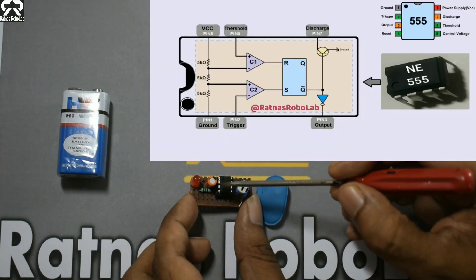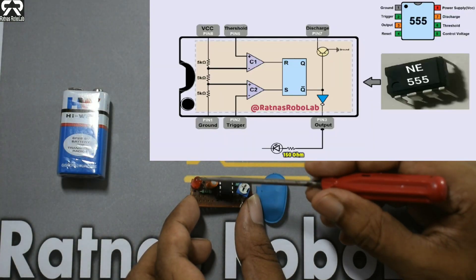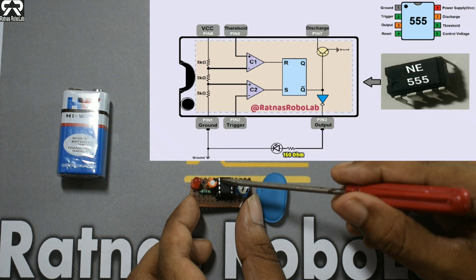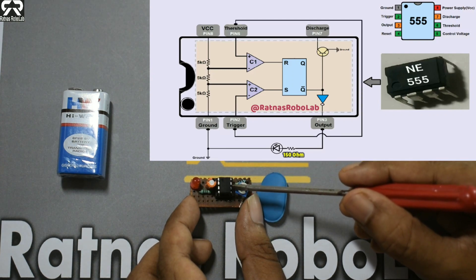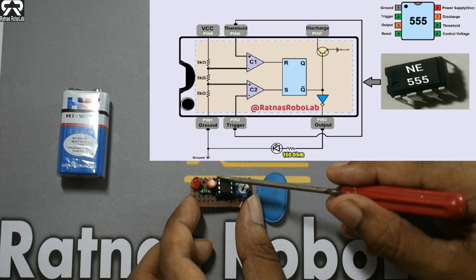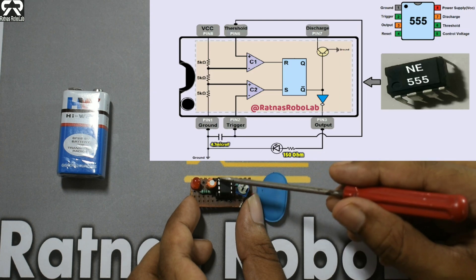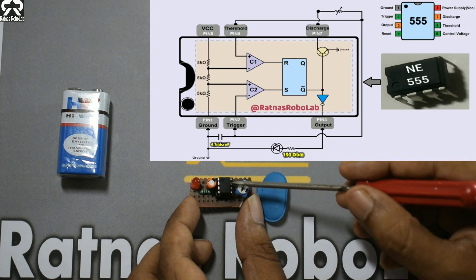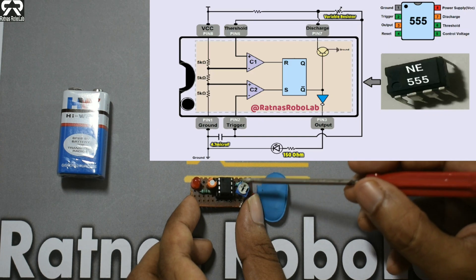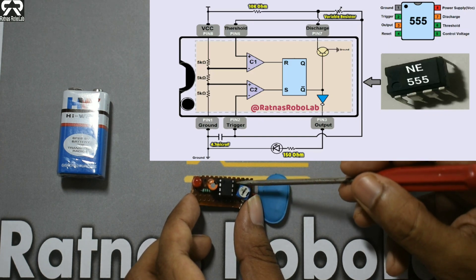Here a LED is connected to pin 3 of 555 timer with a resistance of 150 ohm. Pin 2 is connected to pin 6. A capacitor is connected with pin 2 and ground. Pin 6 is connected to pin 7 with a variable resistance, and pin 7 is connected to pin 8 with a 10 kilo ohm resistor.